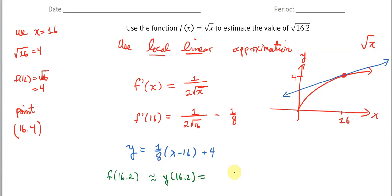And plugging in 16.2 into our equation, we get 1 eighth times 16.2 minus 16 plus 4. So this is 1 eighth times 0.2 plus 4. So working out all that arithmetic, I get that my answer is equal to 4.025. So that's our approximation on this tangent line curve right here.